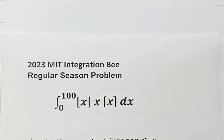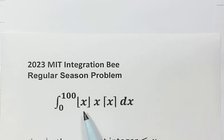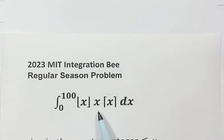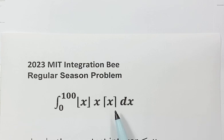In this video, we will be evaluating the integral from the 2023 MIT Integration Bee. So now let's see the question. The integral from 0 to 100, where inside we have the floor of x times x times the ceiling of x.